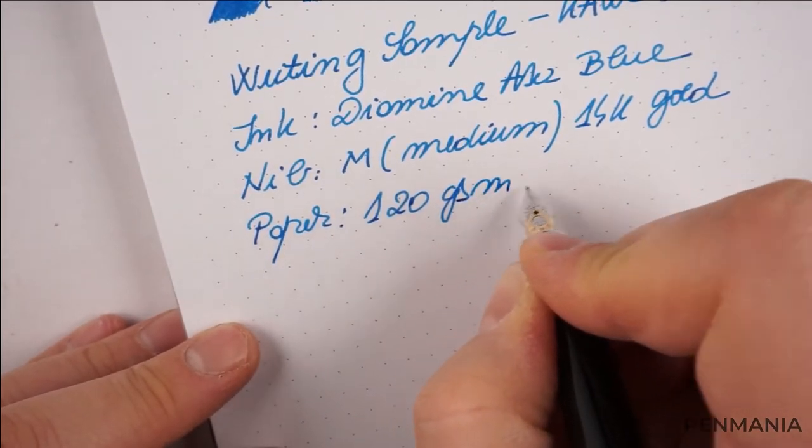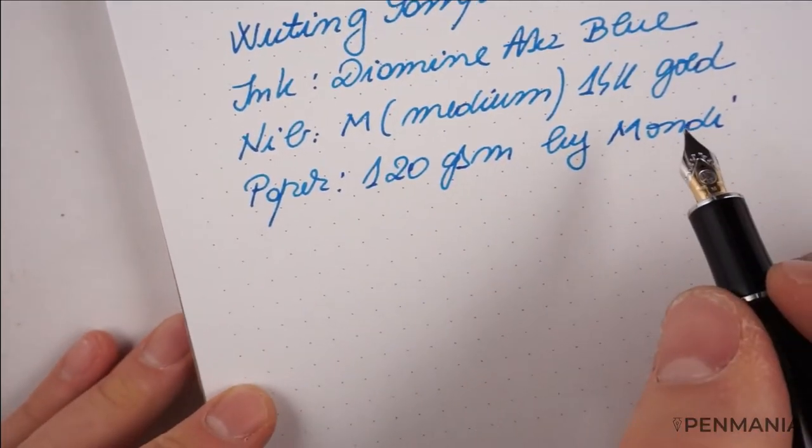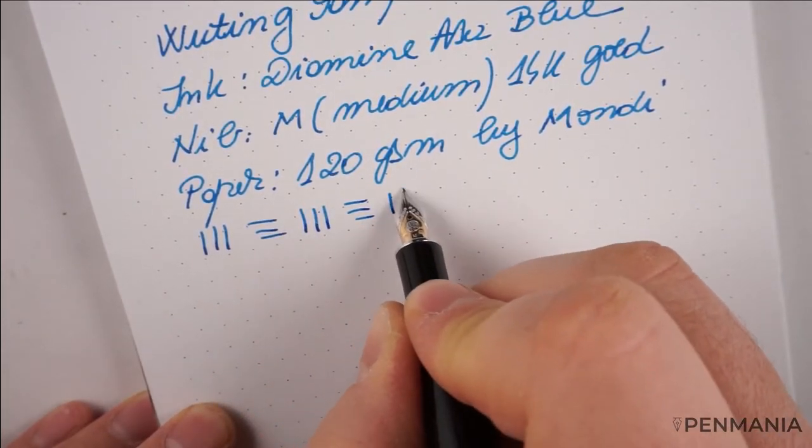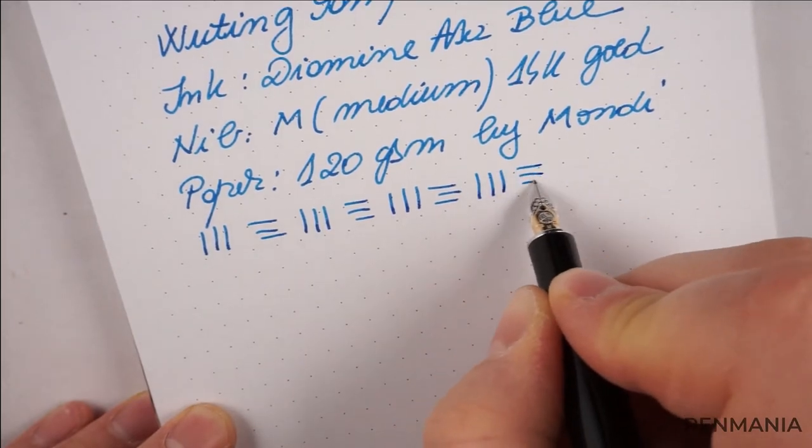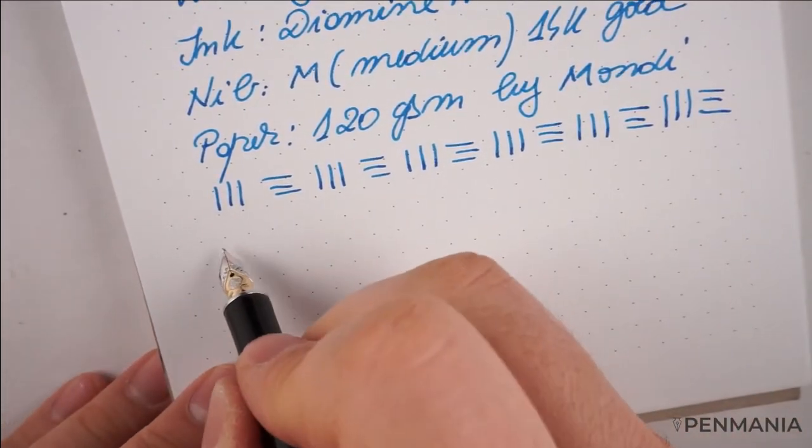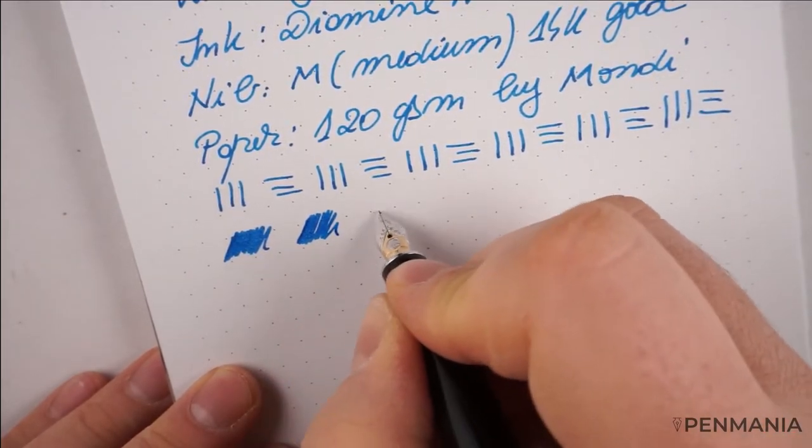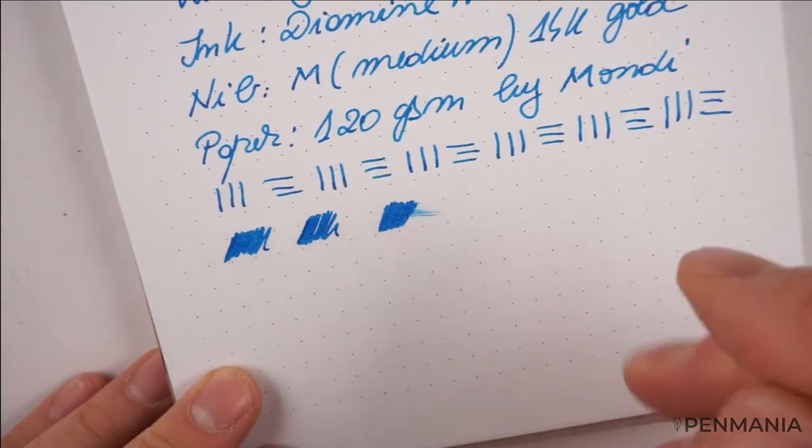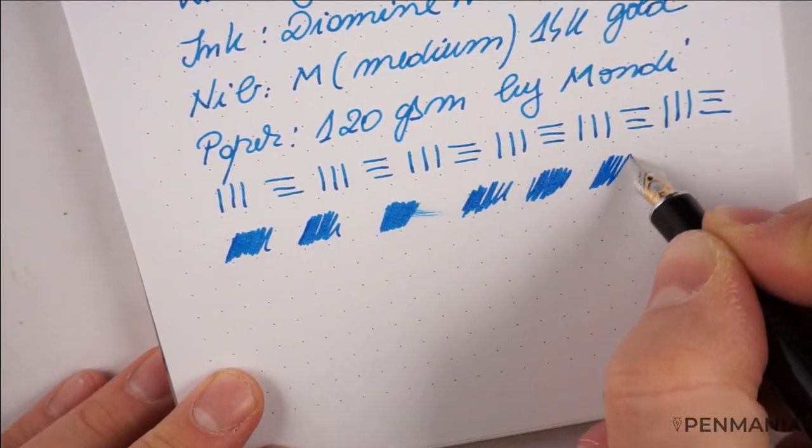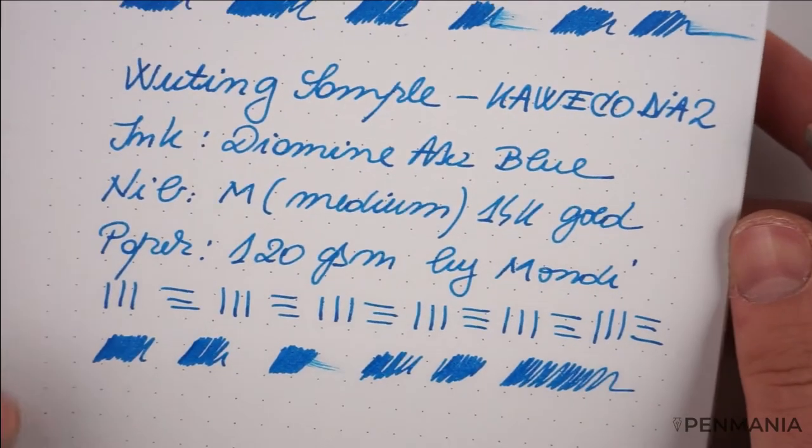The paper, 14 karat gold nib. The line test. Again, excellent performance as with the other papers. And again, this paper is very absorbent. It's one of the main advantages of this notepad.